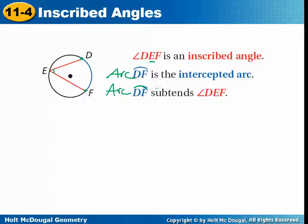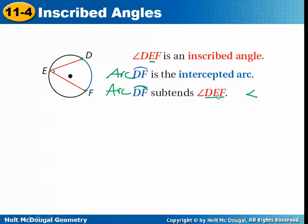Remember to spell out the word 'arc' when typing since there's no easy way to make the arc symbol. For angle, you can use the less-than sign. Make sure you're properly labeling. Generally there will be lots of different angles and points on the circle, so name your angle by three points — the endpoints and the vertex in the middle.